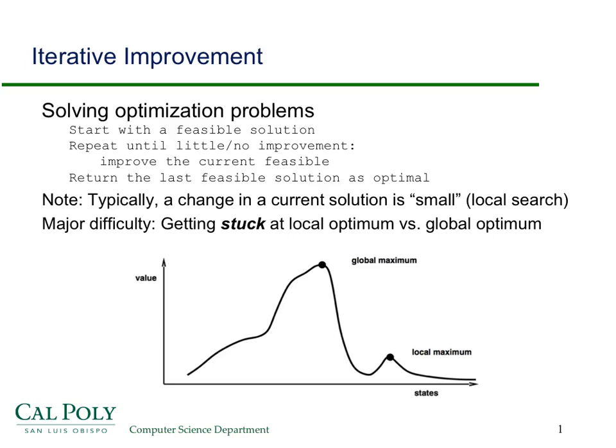This screencast begins a series on a design approach called iterative improvement. It's generally applied to solving optimization problems, and the idea is to start with some feasible solution and repeat until there's no longer any improvement.